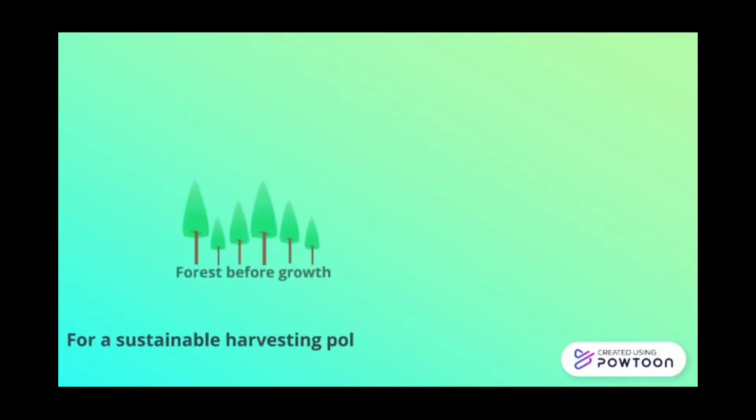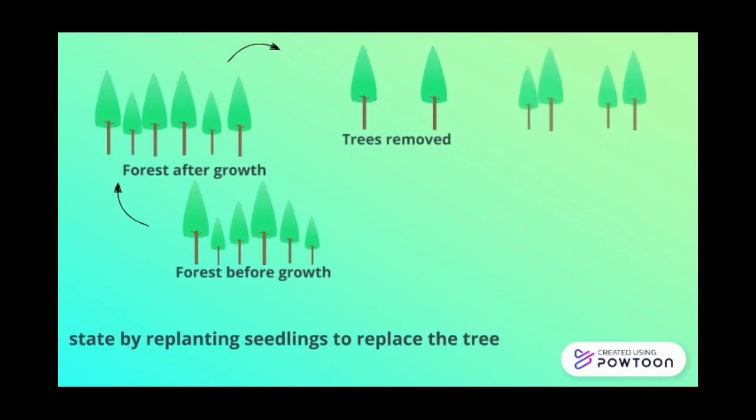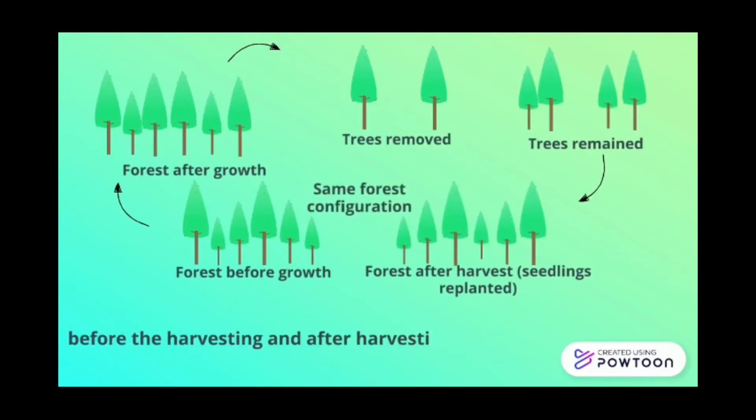For a sustainable harvesting policy, the forest is to be restored to its previous state by replanting seedlings to replace the trees that are harvested. The forest configuration before the harvesting, and after harvesting, and replanting the seedlings must be the same.